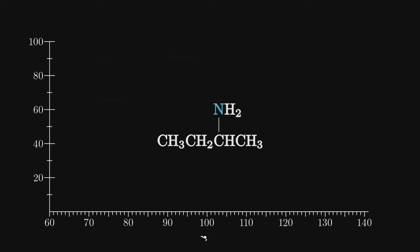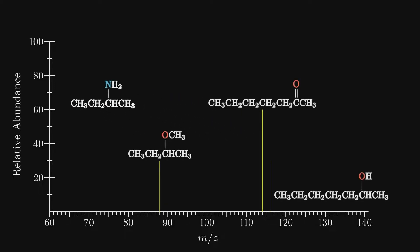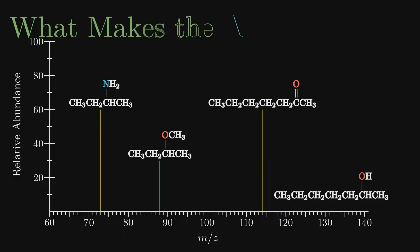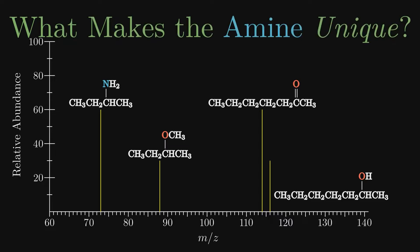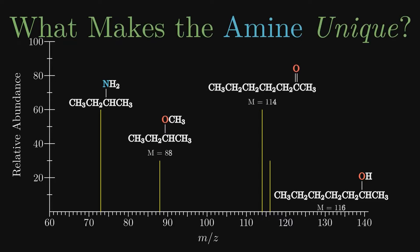Our last functional group for this video is the amines, and we do not have to worry about alpha cleavage or McLafferty rearrangements. It is much easier, but it is so simple you may not spot it easily. Here are the molecular ion peaks of the previous three substances — the peaks are in the correct position, but the heights are just for show. Now here is the molecular ion peak for butan-2-amine. It is peculiar when compared to what we have seen so far. Do you see it?